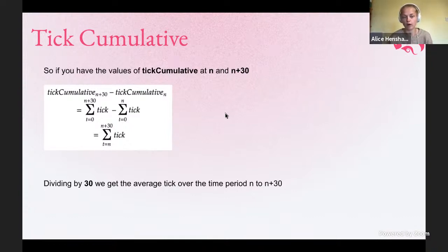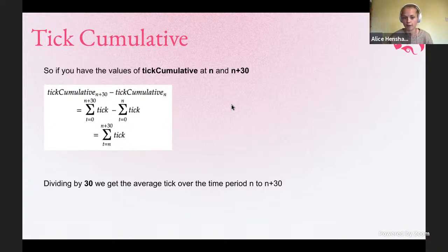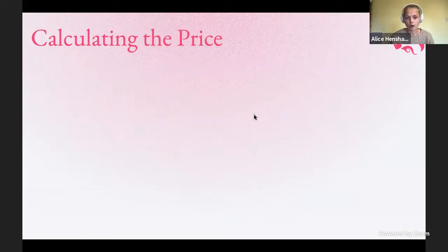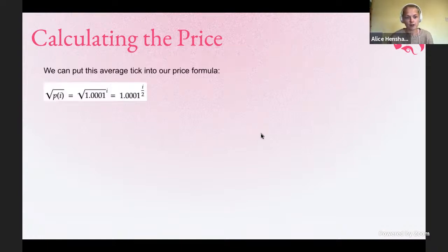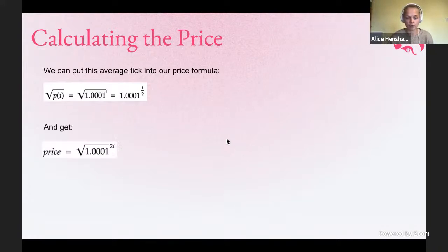That gives you a more manipulation-resistant tick or price. If you just take the current price, someone might have quickly done a trade to push it either up or down in their favor. Whereas this gives you the average price over a period of time of your choosing, so that if someone changes the price now, the average isn't as affected by that. The tick isn't actually the price — it's a power of 1.0001. So we can put our average tick into our formula, and that gives us the price.